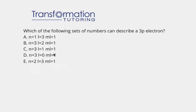Which of the following sets of numbers can describe a 3P electron? There are four quantum numbers that describe an electron.